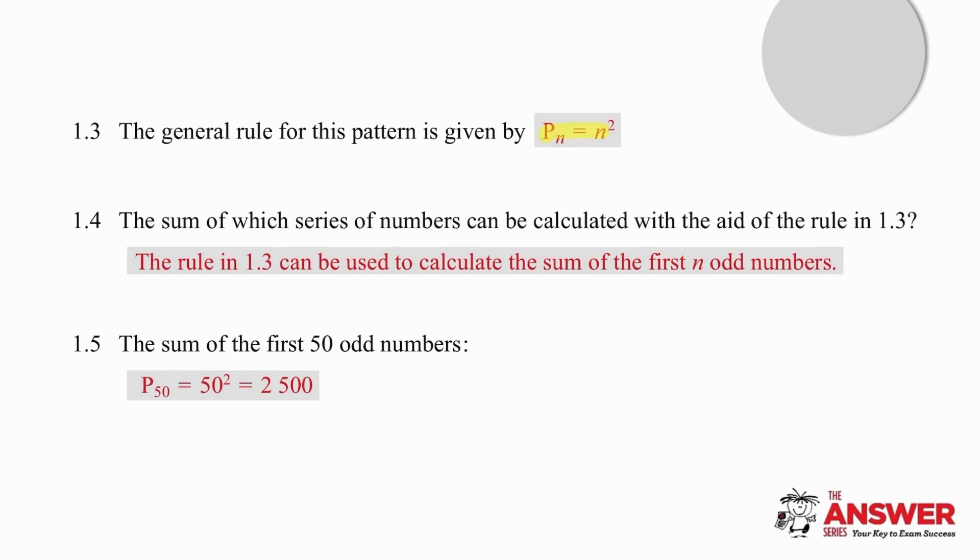We discussed the pattern formula earlier. What we're working with here is a rule that helps us to calculate the sum of the first n odd numbers, which is pretty amazing. If we want the sum of the first 50 odd numbers, rather than add them very tediously together, we can literally just multiply 50 by itself, get 2500, and that is the sum of the first 50 odd numbers. Quite remarkable.